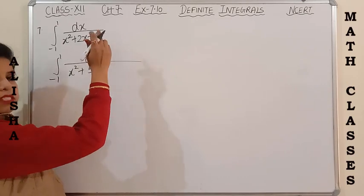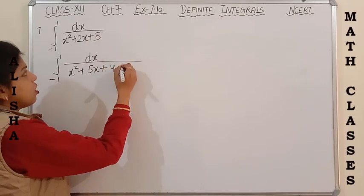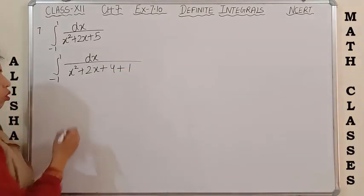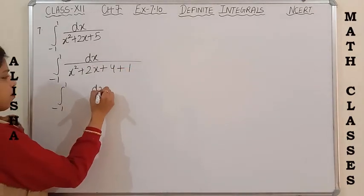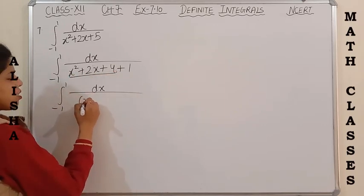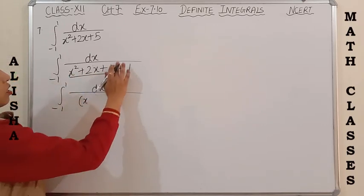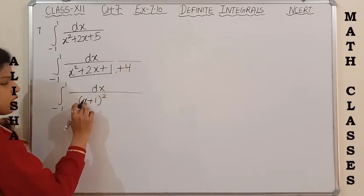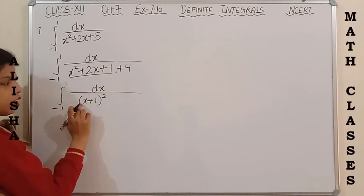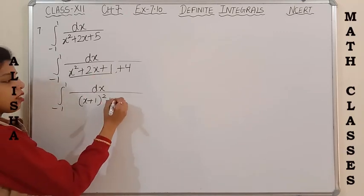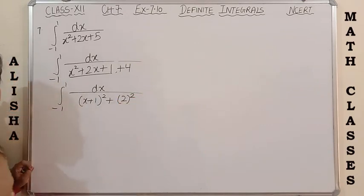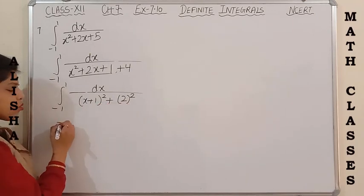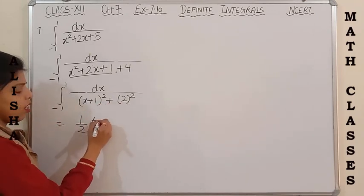Here 5 can be split into two parts: 4 + 1. So x² + 2x + 1 becomes the formula (x + 1)² because x² + b² becomes 1 and 2ab becomes 2x. And 4 can be written as 2², so it becomes the integral of 1/((x+1)² + 2²), which is in the form 1/(x² + a²).